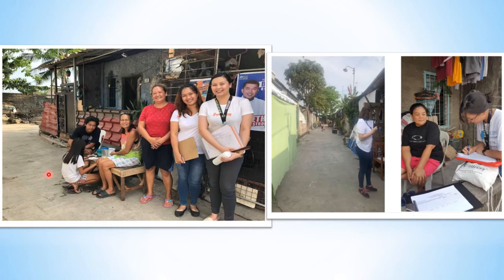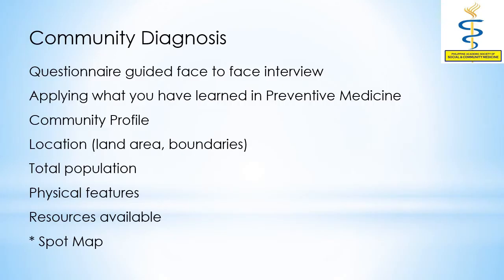As early as first year, we expose the students to the adopted or partner community by conducting a community diagnosis. We ask the students to prepare their own questionnaire, and of course they apply what they have learned in preventive medicine. They should look at the community profile: the location, the land area, and the boundaries — in short, they will prepare a spot map — and the total population, the physical features, and the resources available.